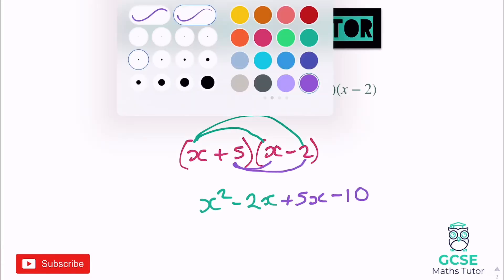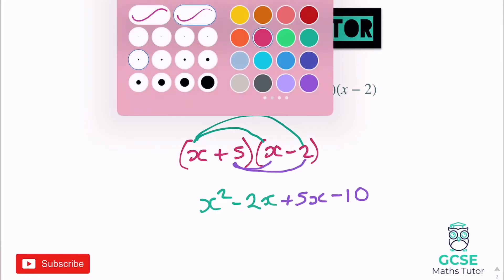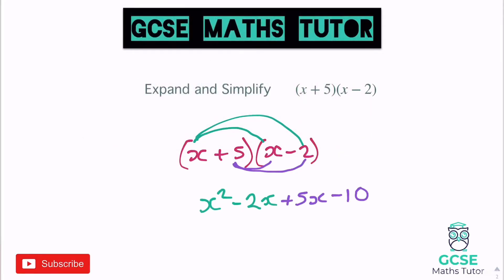Then again, we just need to simplify this. Tidying it up, being careful because we've got negative 2 add 5 in the middle. Negative 2 add 5 is positive 3, so we end up with positive 3x in the middle, and keeping that negative 10 at the end. And that's it, expanded.